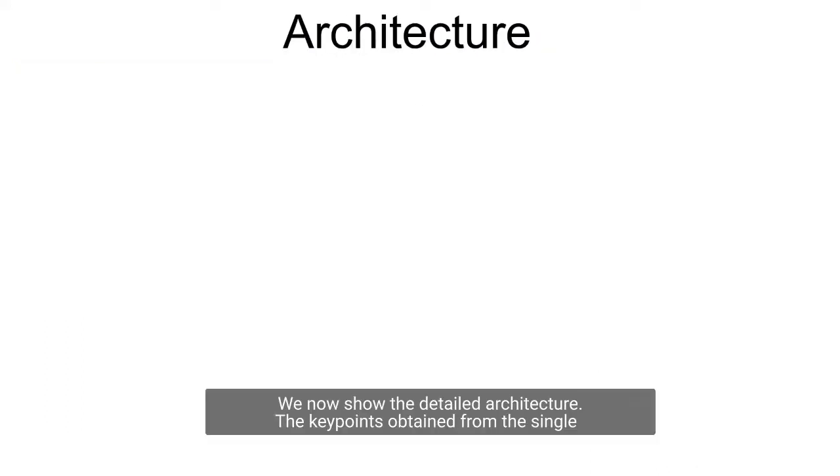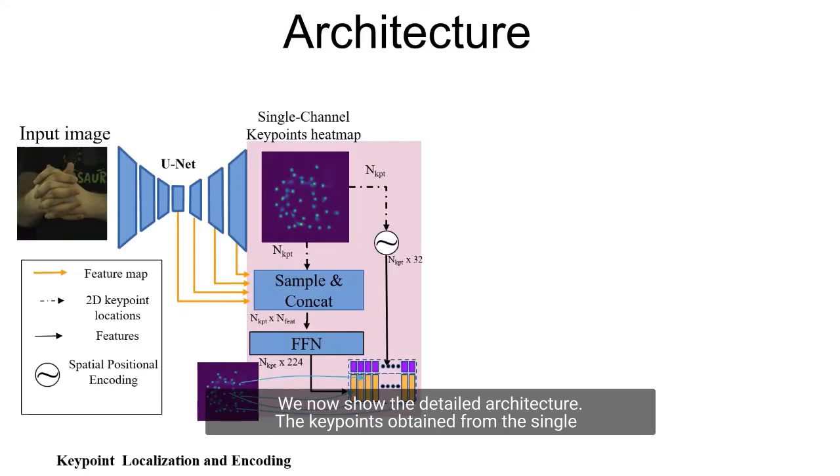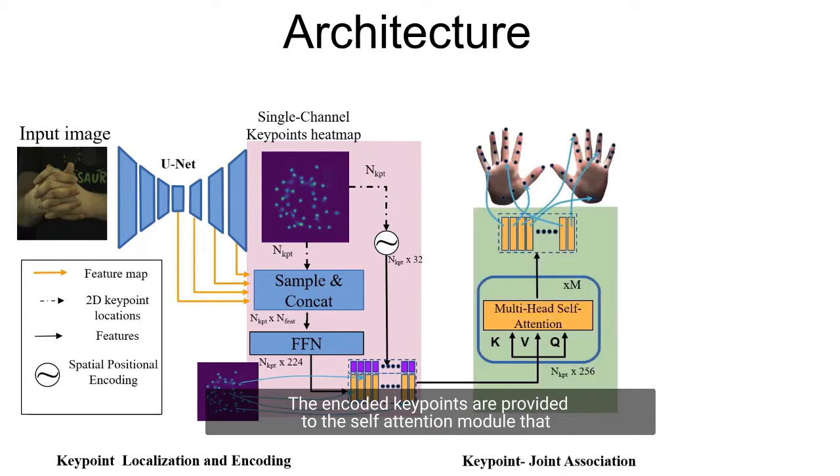We now show the detailed architecture. The keypoints obtained from the single channel heatmap regressor using U-Net are encoded using appearance and spatial embeddings.